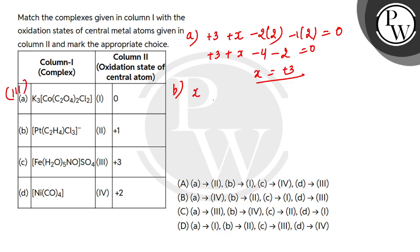B mein dekhte hain, platinum ke liyeh x. C2H4 is ethene aur yeh neutral ligand hoota hai toh koji charge contribute nahi kareega. Tene Cl dee rakhe hai toh tene Cl ki wajay se minus three ka charge ho ga aur complex mein minus one ka charge hai, toh x ki value ho jayega aapki plus two. Toh b ka match hooga four ke saath me.